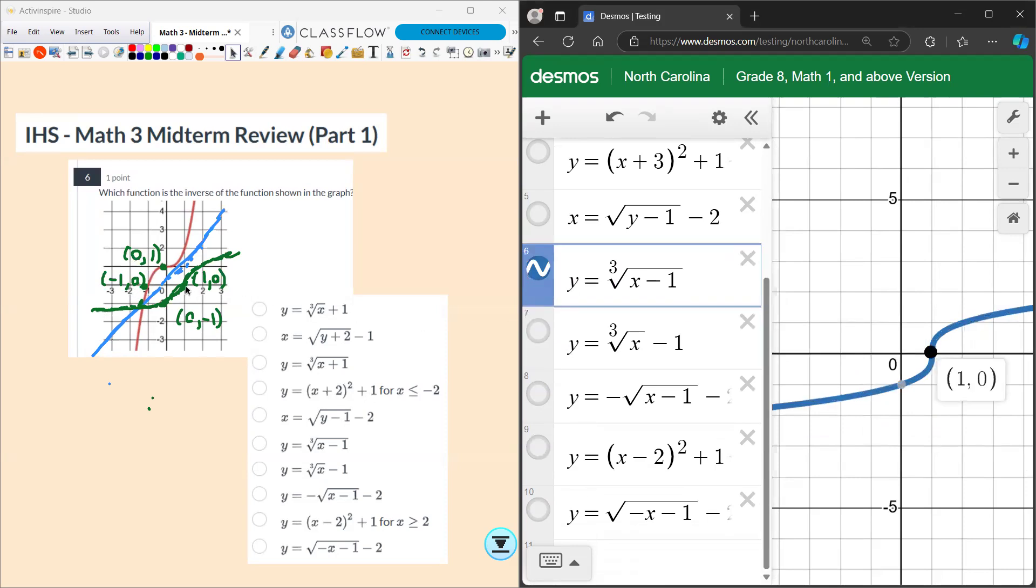As you can see here, (1,0) is a good spot there. So that's going to be our answer, the cube root of x minus 1.